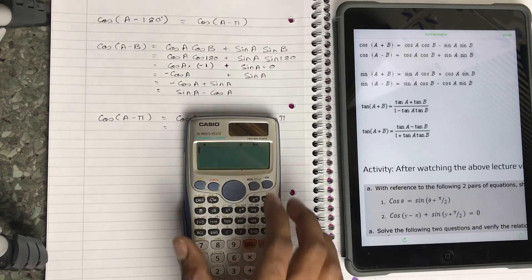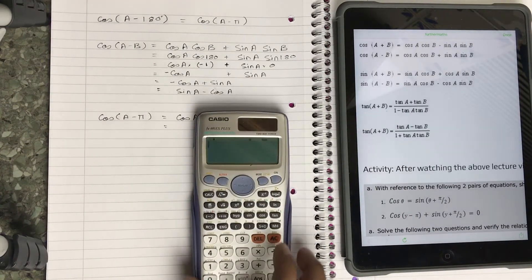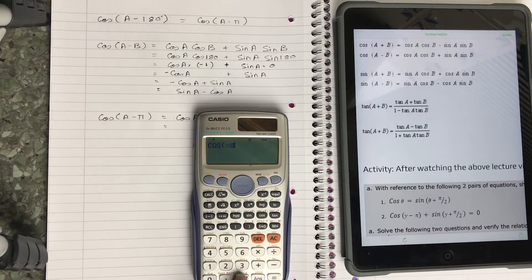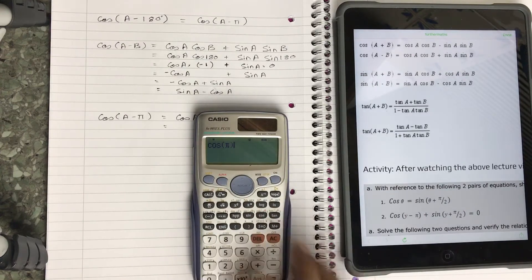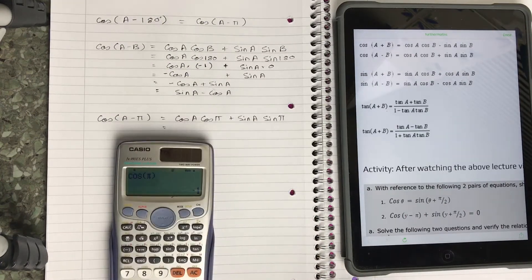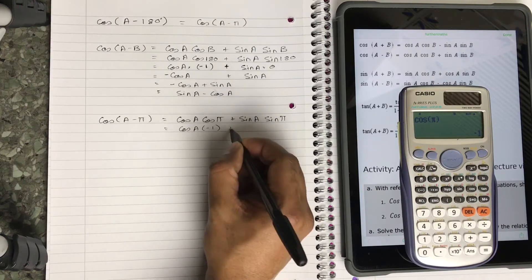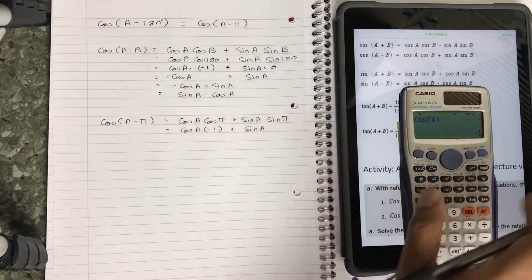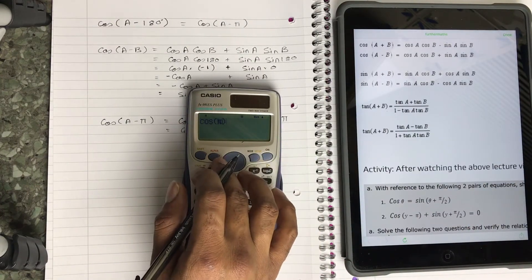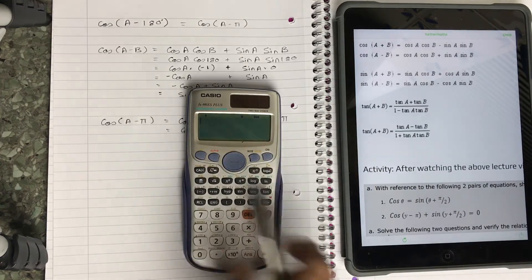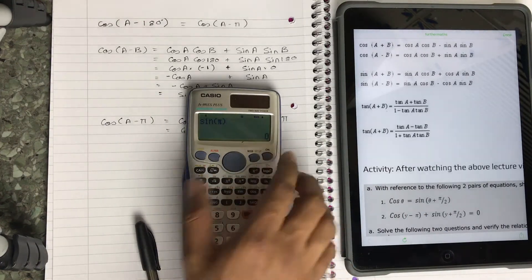Now that we have it in radian mode, I can solve this problem. So cos(π) - shift π close - it's going to be minus 1. Keep this aside here, that's going to be cos(A) times minus 1, plus sin(A) times - I'm just going to change this - sin of shift π close bracket will be 0.